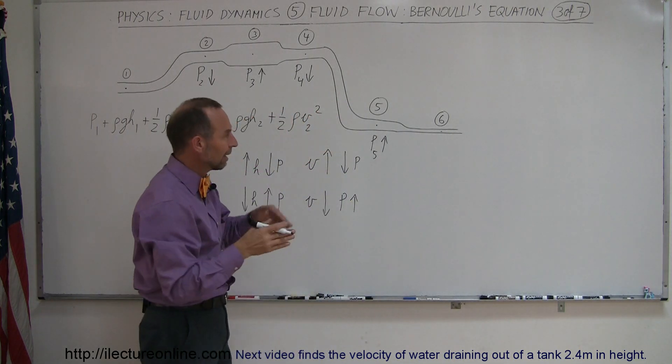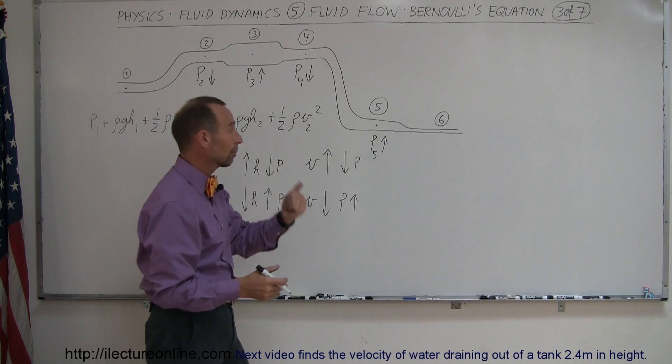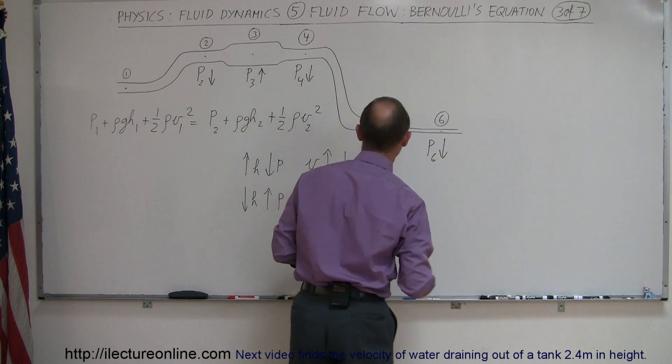And now the pipe narrows again. If the pipe narrows, that means the velocity has to increase. If the velocity increases, the pressure has to go down. So at point 6, the pressure goes down.